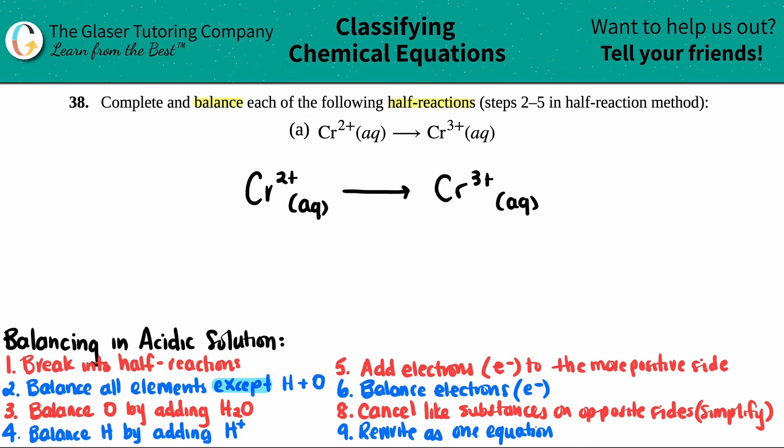And the reason why we don't have to do all of the steps is because we're only dealing with half-reactions, and the first step is to break it into a half-reaction. But if we already have a half-reaction, we don't have to do this step.